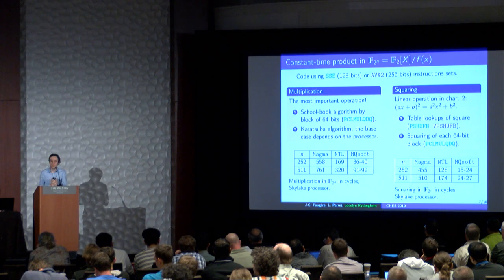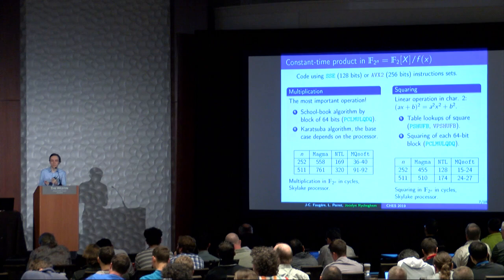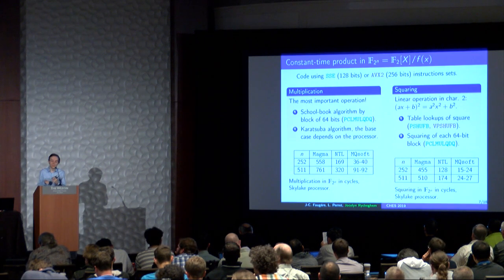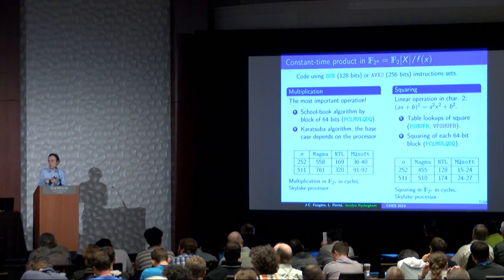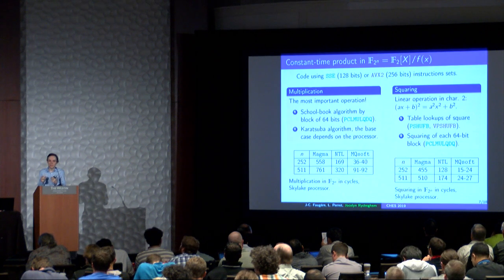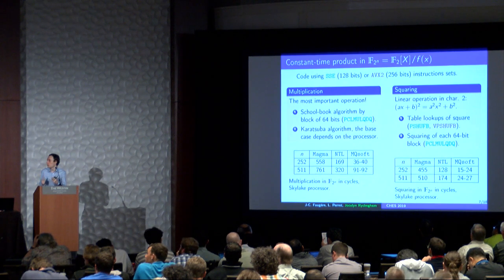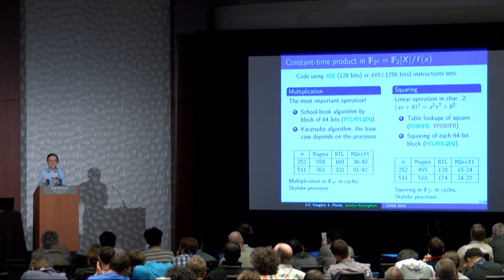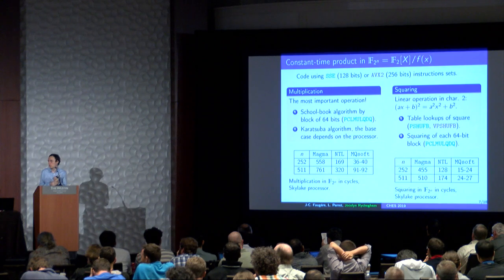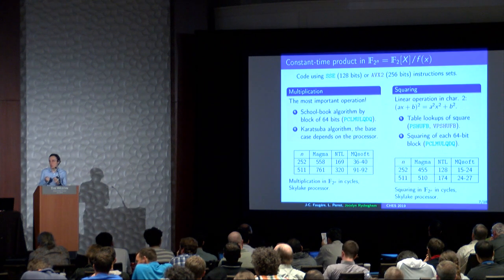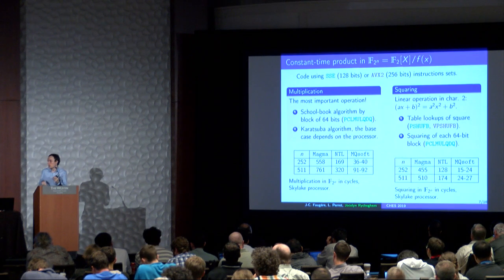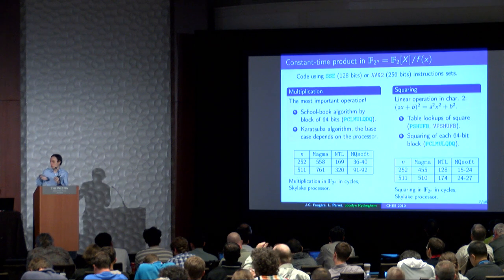For multiplication and squaring in GF(2^N): we construct GF(2^N) from GF(2)[X] modulo a degree-N irreducible polynomial. We need a constant-time implementation to protect against timing attacks. The multiplication is the most important operation. For this, we use the PCLMULQDQ instruction, which computes the product of two degree-63 polynomials in GF(2)[X] in one instruction. The idea is to use the schoolbook algorithm by blocks of 64 bits, and when we want to multiply two blocks, we just use the PCLMULQDQ instruction. When the value of N is large enough, we use the Karatsuba algorithm to reduce the number of calls to PCLMULQDQ. The performance of this instruction depends on the processor — it is faster on the Skylake processor — and this impacts when we choose Karatsuba for a given value of N.